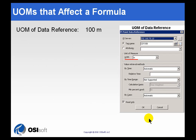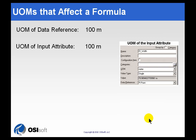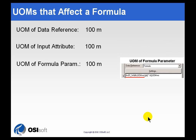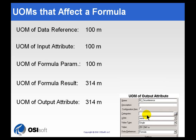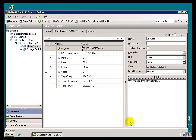There's when we retrieve the data from PI, when we set up the Data Reference, when we configure the Input Attribute, when we assign the Formula Parameter — the first parameter in the Formula gets a Unit of Measure there. The Result gets a Unit of Measure. And then, once that Result comes back to AF, we can have one last opportunity to specify a Unit of Measure for the Output Attribute. So let me show you a couple of ways we could have gone about this.